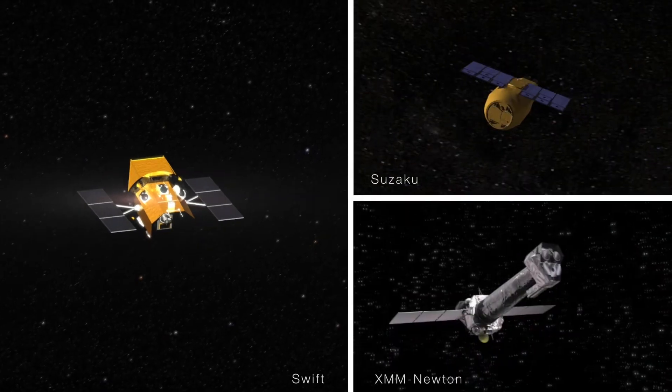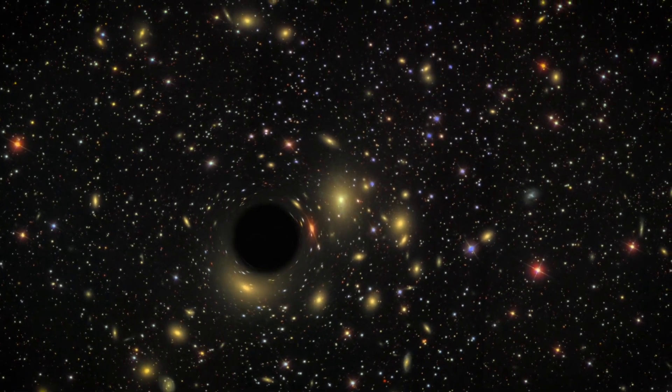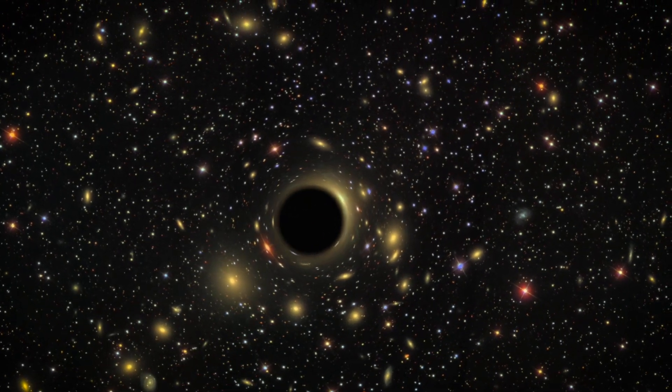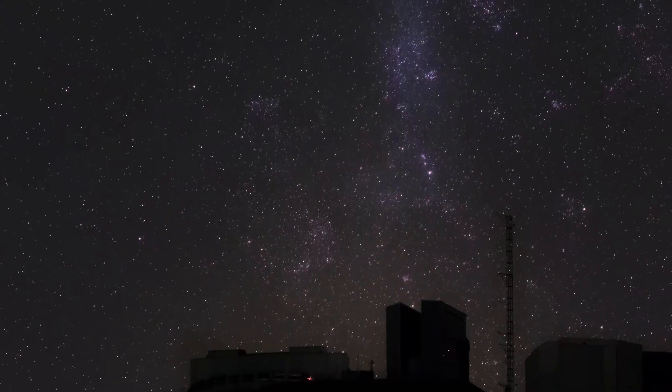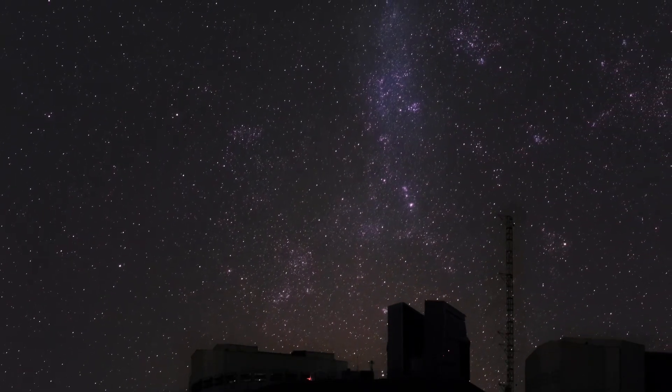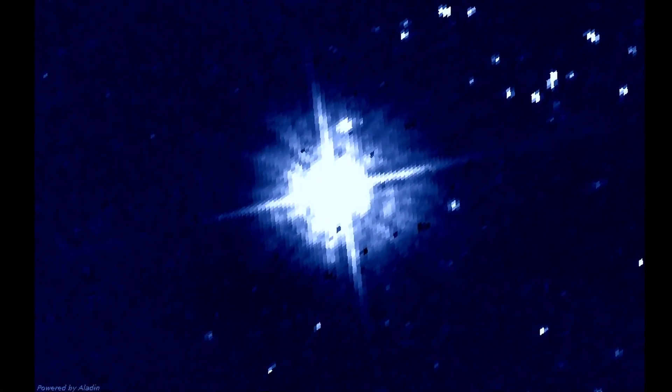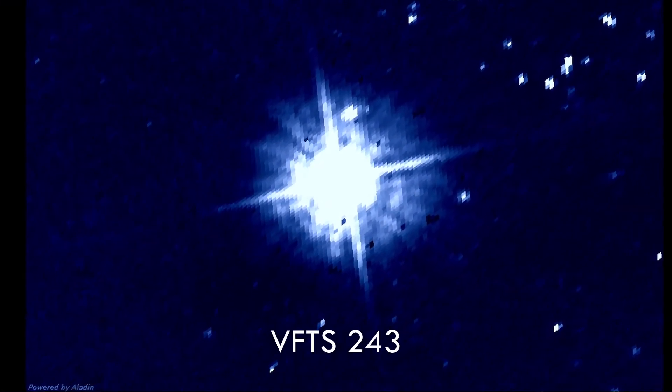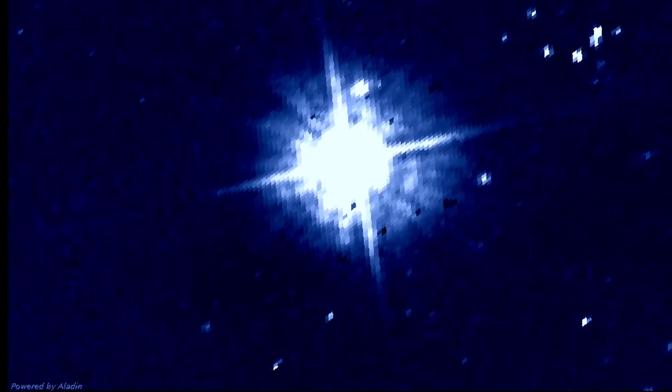For the first time, we have direct proof of a black hole forming from a massive star that collapsed without any supernova evidence or disturbances near its star system. This confirms that some massive stars can indeed collapse quietly into black holes. To grasp what's happening, we need to examine a star system discovered two years ago, known as VFTS 243, located in the Tarantula Nebula within the Large Magellanic Cloud.